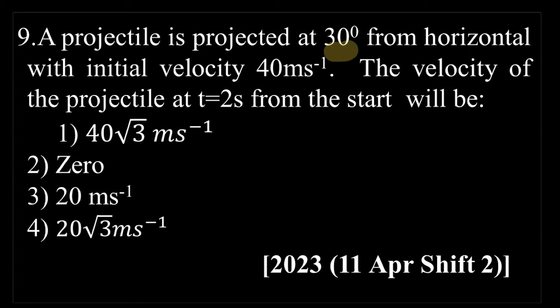A projectile is projected at 30 degrees from horizontal with initial velocity 40 meters per second. The velocity of the projectile at t equals 2 seconds from the start would be, right?